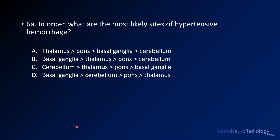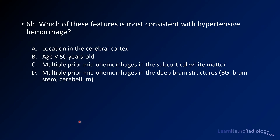Your first question is, in order, what are the most likely sites for hypertensive hemorrhage? This question has given away something about the potential diagnosis. Your second question is, which of these features is most consistent with hypertensive hemorrhage? The options are: location in the cortex, age less than 50, multiple prior microhemorrhages in the subcortical white matter, or multiple prior microhemorrhages in deep brain structures.